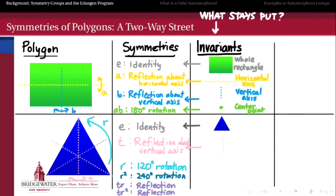For the equilateral triangle, it's a similar story. The identity fixes the whole triangle. The reflections each fix their respective axis of reflections. And the rotations each only fix that point that's at the center, the barycenter in this case, of the equilateral triangle.